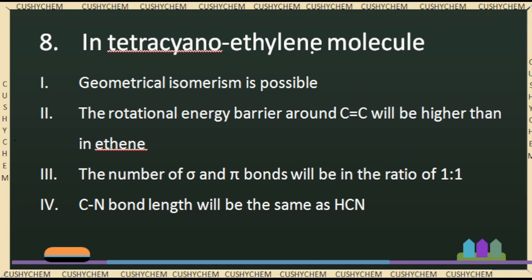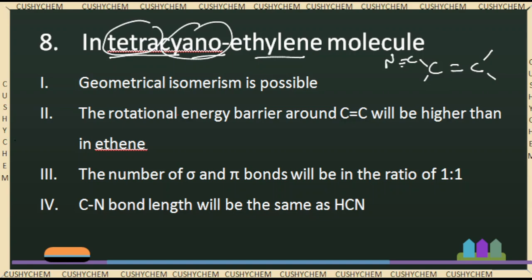Next, tetracyanoethylene. The ethylene molecule is C=C, and 4 CN groups are attached — C≡N, C≡N, C≡N, C≡N — cyanide groups. Geometrical isomerism is not possible in tetracyanoethylene. The rotational energy barrier around the C-C bond will be higher than in ethylene. The number of sigma and pi bonds will be in the ratio of 1:1. The C≡N bond length will be the same as in HCN. Let us count the number of sigma bonds.